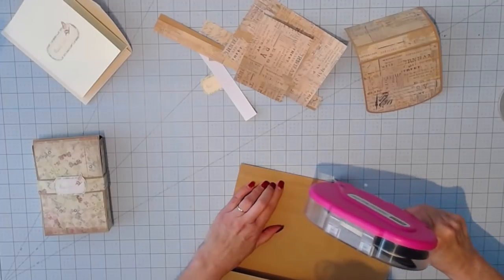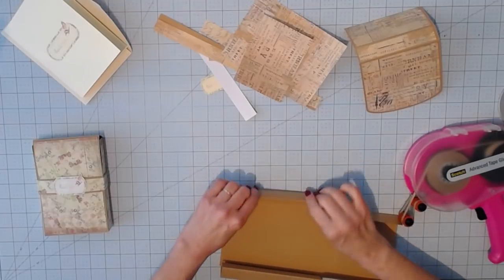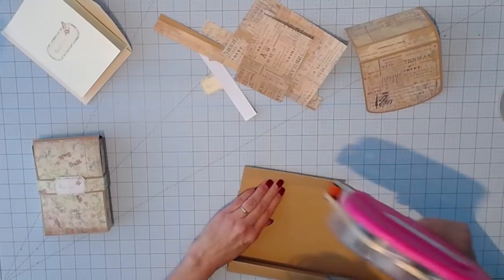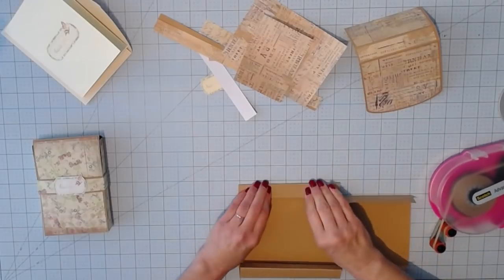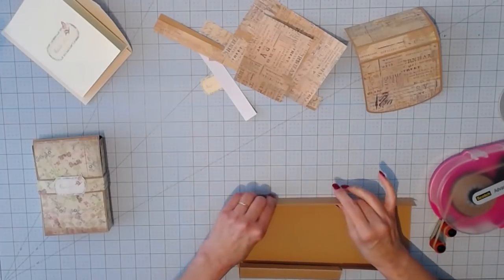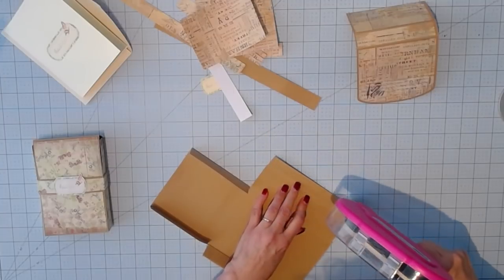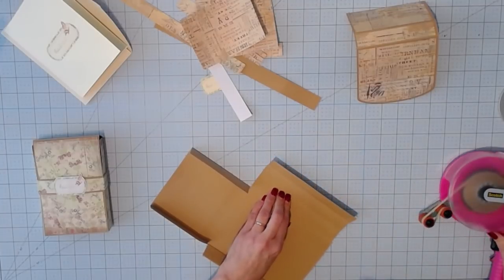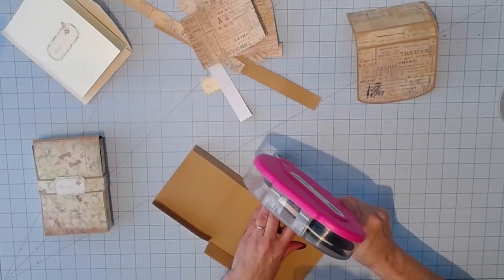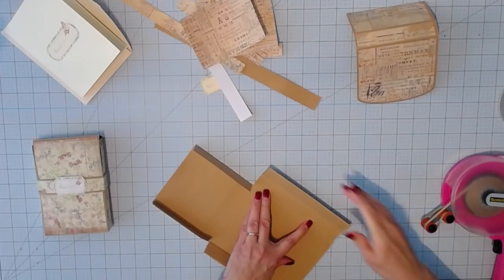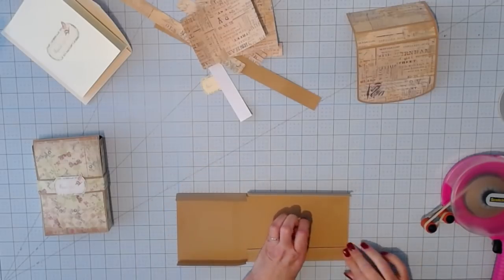So you want to add adhesive to the first fold and fold it over. Again add adhesive to the second fold and fold it over. And when you do this, you'll see that it makes the sides of the box very strong.